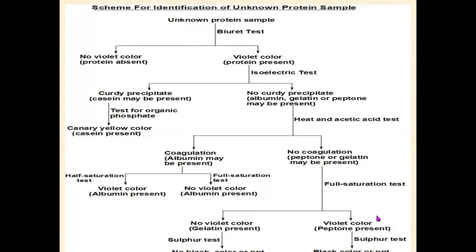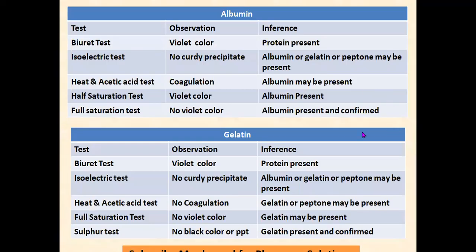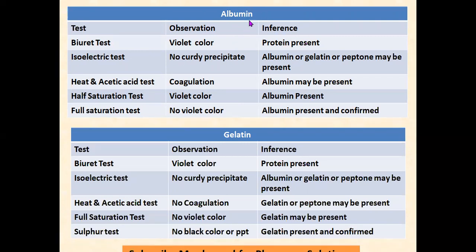That is how you can use the chart for identification of protein samples. When you get the sample and don't know which protein it is, if your sample is albumin: biuret test gives violet color — protein present; isoelectric test — no curdy precipitate; heat and acetic acid test — coagulation, albumin may be present; half saturation test — violet color, albumin present; full saturation test — no violet color, albumin present and confirmed.